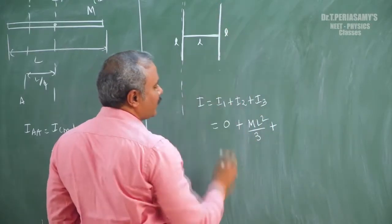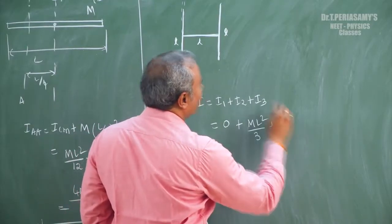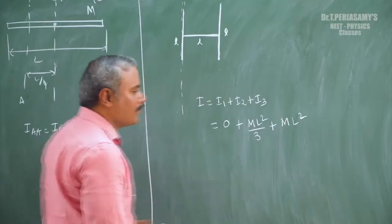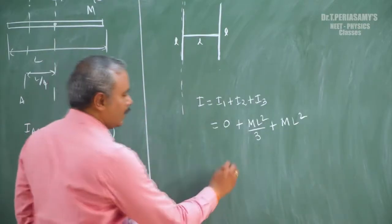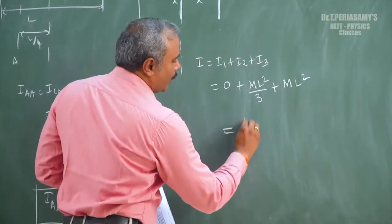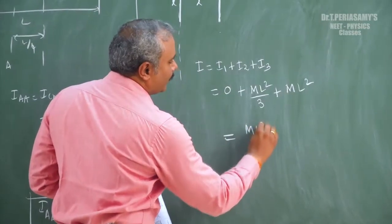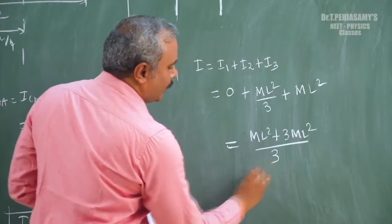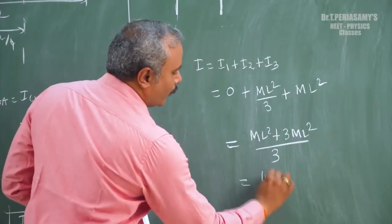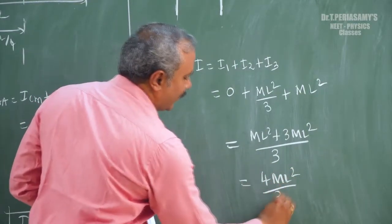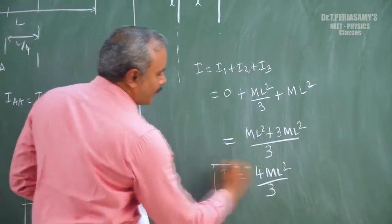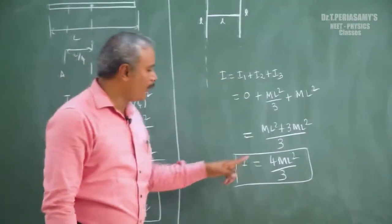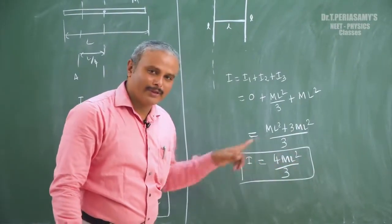If we consider the third rod as a point mass at distance L, its contribution is m times L squared. So solving: mL squared by 3 plus 3mL squared by 3 gives the answer 4mL squared by 3. With respect to one side, the moment of inertia is 4mL squared by 3.